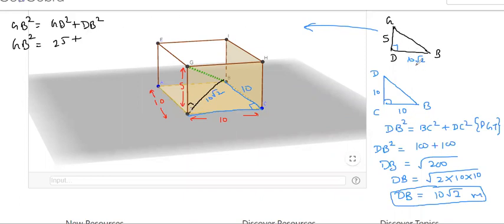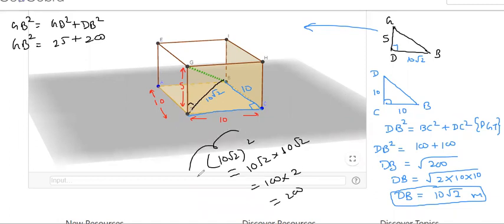So GB, GD is what? Can I write 25? DB square, 10 root 2 square, and 10 root 2 square is nothing but 200, isn't it? We started off from there. 10 root 2 square means 10 root 2 into 10 root 2. 10 into 10 is 100, root 2 into root 2 is 200.